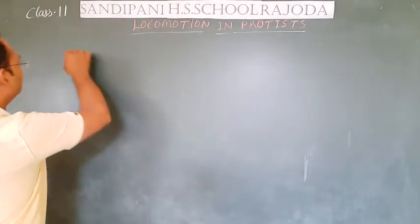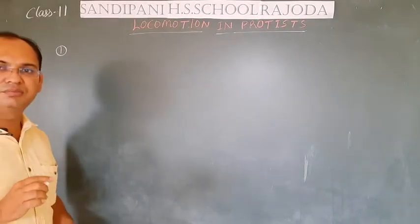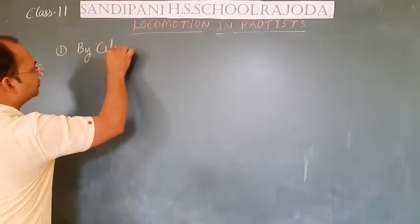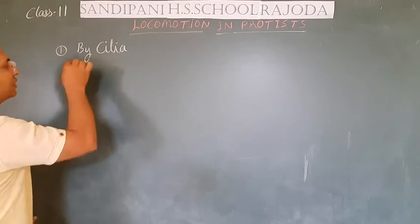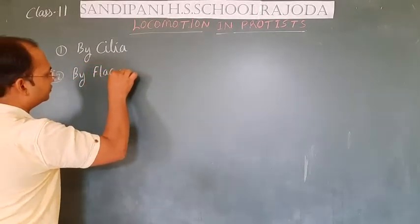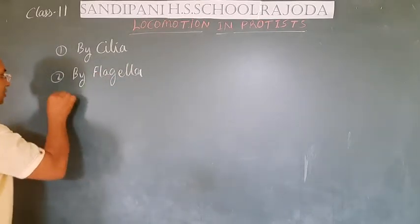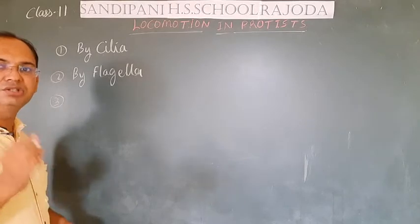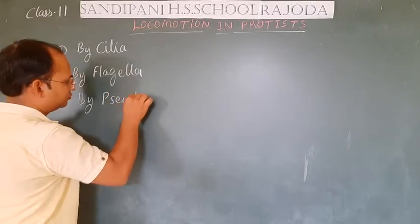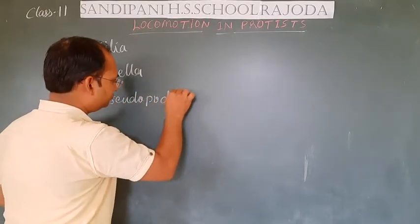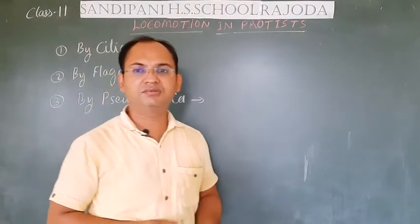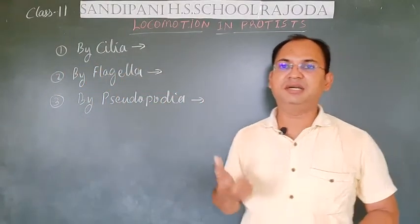The very first type of locomotion found in Protista is by cilia. The second type of locomotion is by flagella. And the third type of locomotion is by pseudopodia. Now students, let us understand them one by one — how locomotion takes place by cilia, flagella, and pseudopodia.